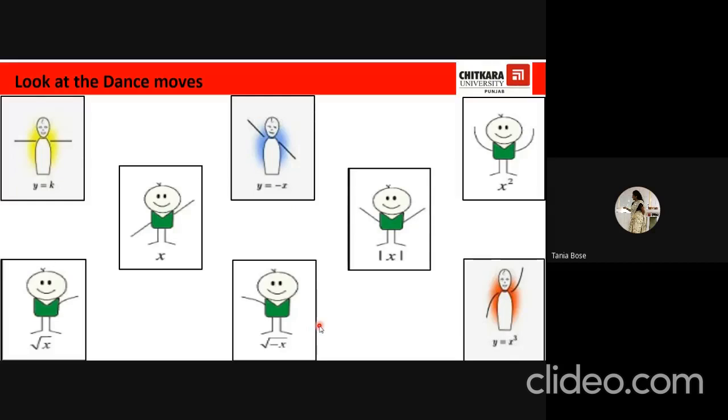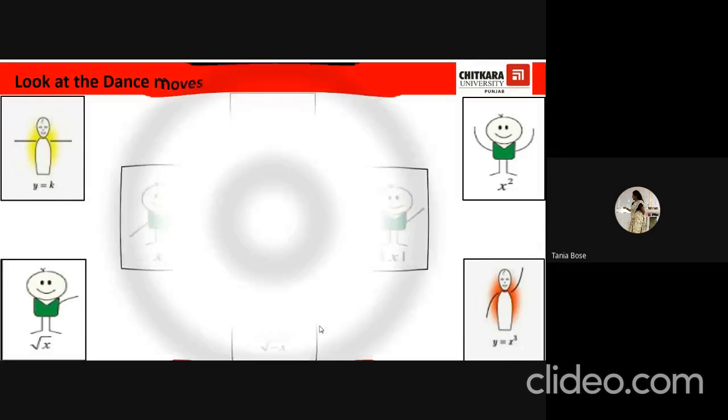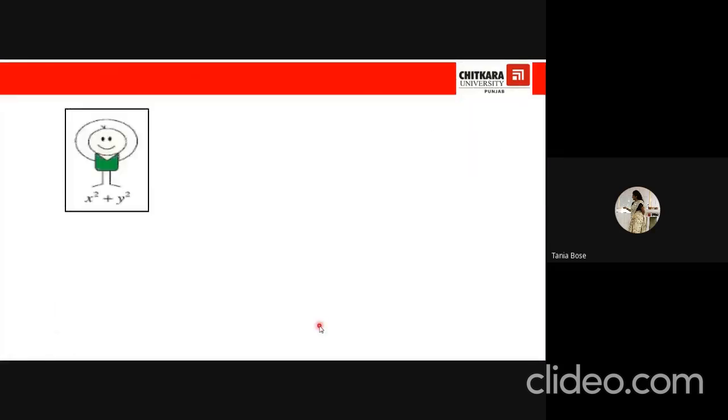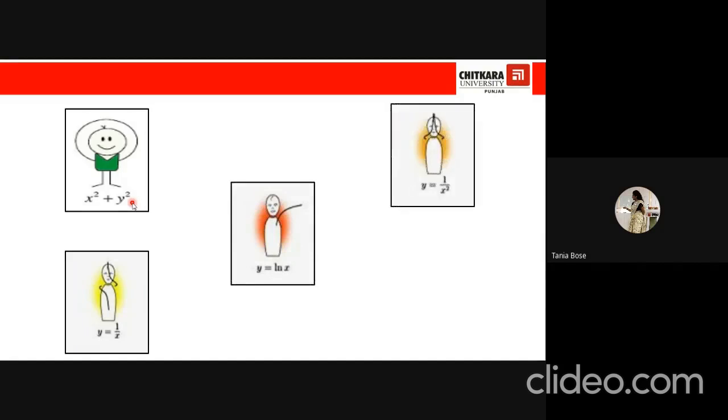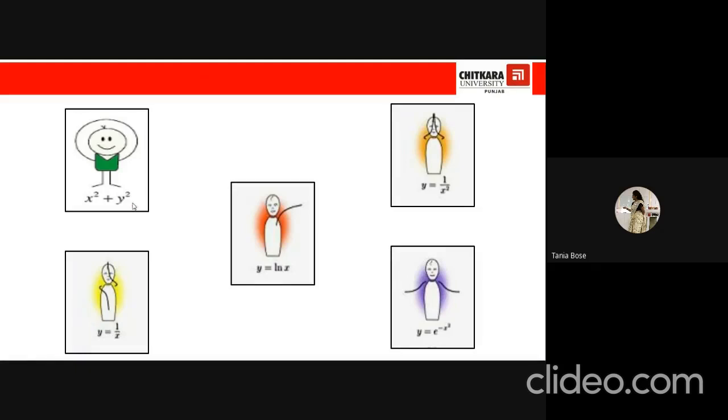So see how can maths get related to these dance moves? Let's see a couple more of these dance moves. So this is the graph for X squared plus Y squared equal to something, some radius. Y equal to 1 by X. Y equal to log X. Y equal to 1 by X squared. Y equal to e to the power of minus X squared.